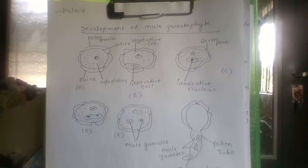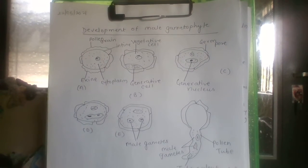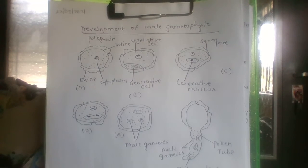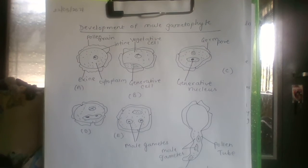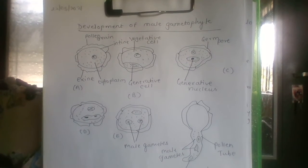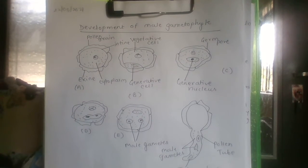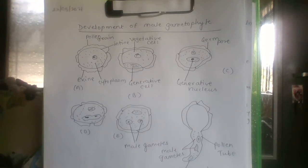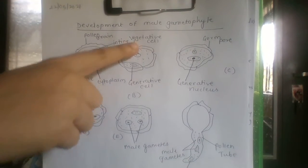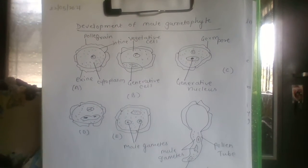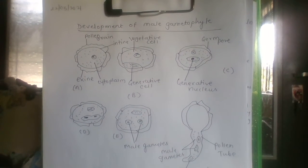Hello students. In the previous lecture, we discussed the structure of microspores or pollen grains. Today we are going to discuss the development of male gametophyte, including the formation of two cells — vegetative cell and generative cell — and the formation of the pollen tube.